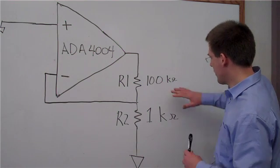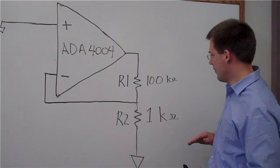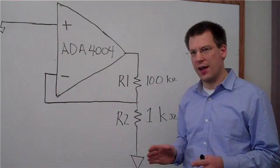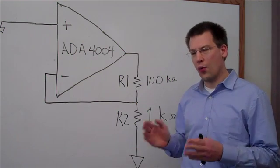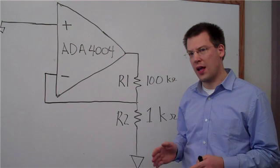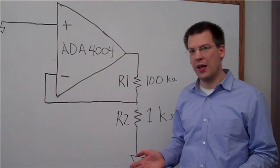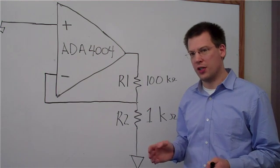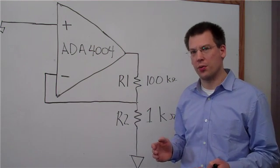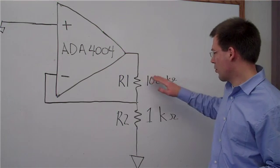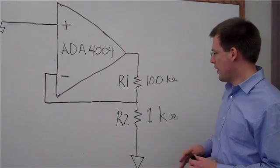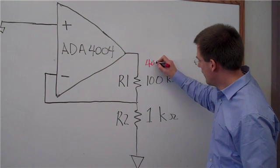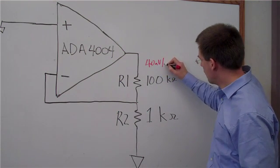The first thing we want to look at is this 100 kilohm resistor. If you don't know this shortcut, it's a very nice one to memorize: a 1 kilohm resistor has 4 nanovolts per root hertz noise. To get the noise of any other resistor, you take the square root of the value in kilohms and multiply it by that 4 nanovolts per root hertz. For our 100 kilohm, we take the square root of 100 and multiply by 4, so we get 40 nanovolts per root hertz.